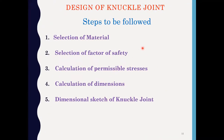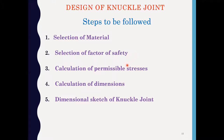These are the steps to be followed to design the knuckle joint. Step 1: selection of material. Step 2: selection of factor of safety. Step 3: calculation of permissible stresses. Step 4: calculation of dimensions. Step 5: dimensional sketch of the knuckle joint. For material selection, since knuckle joint is subjected to tensile load, we select plain carbon steel having SYT = 400 N/mm². We have not considered the stress concentration effect, so to compensate we select a higher factor of safety: FOS = 5.